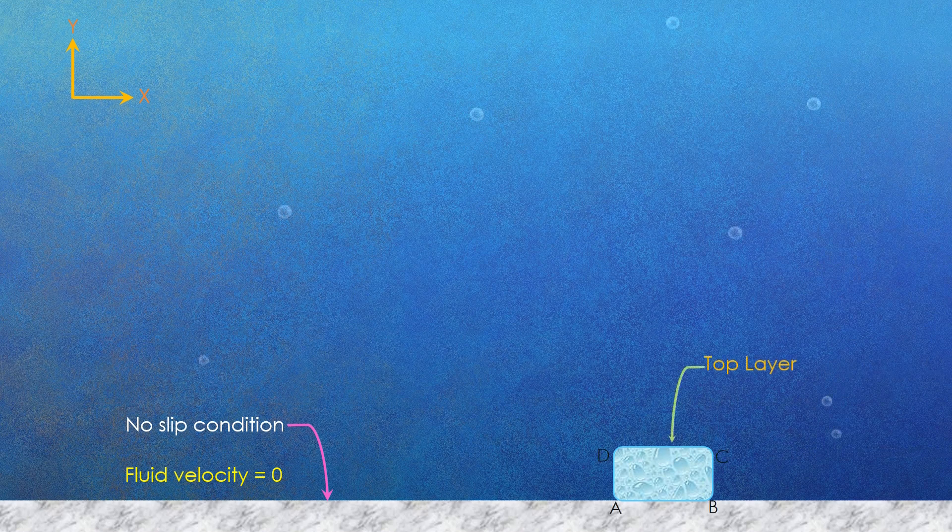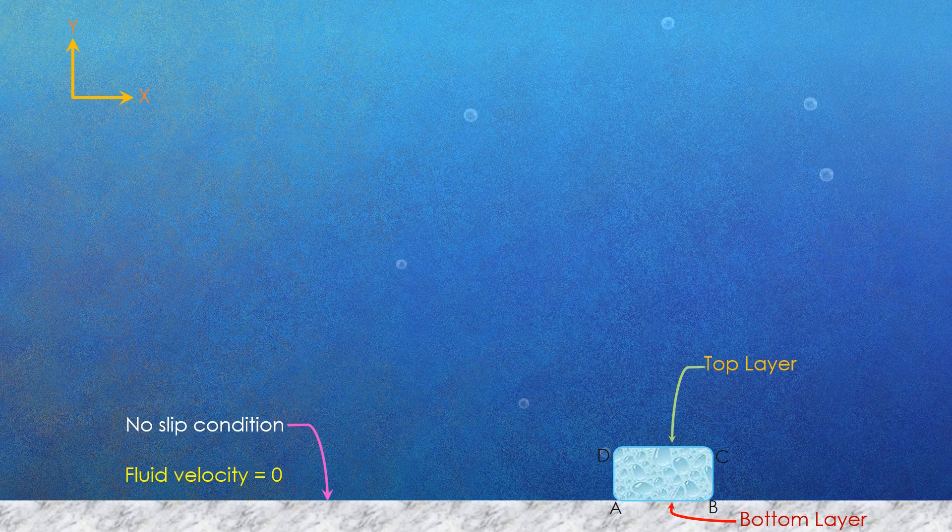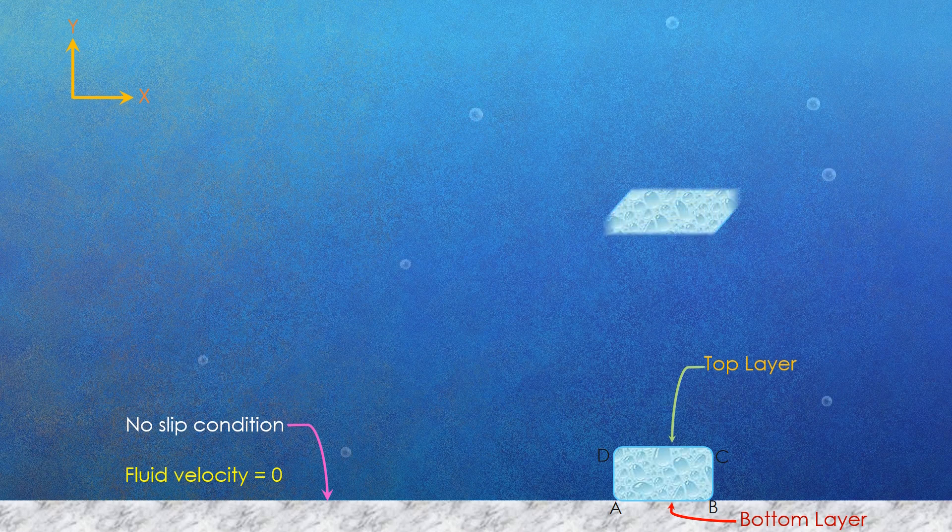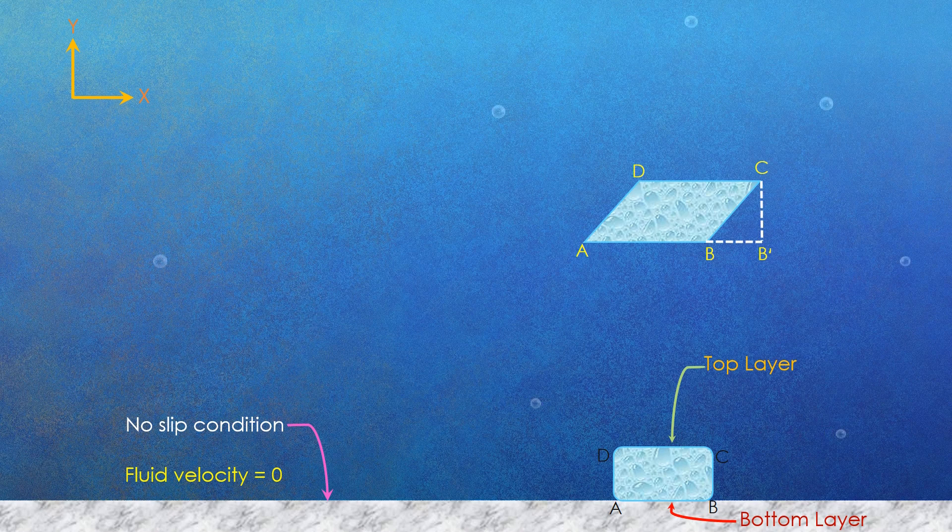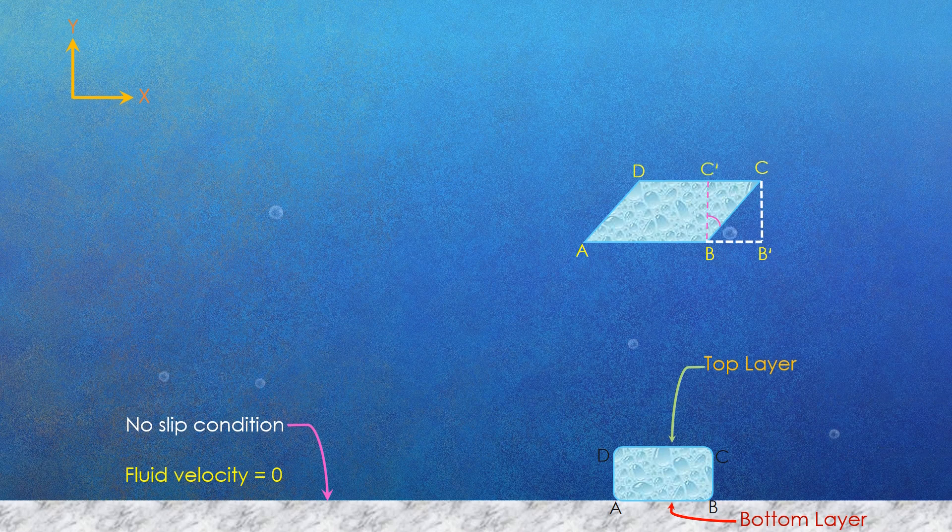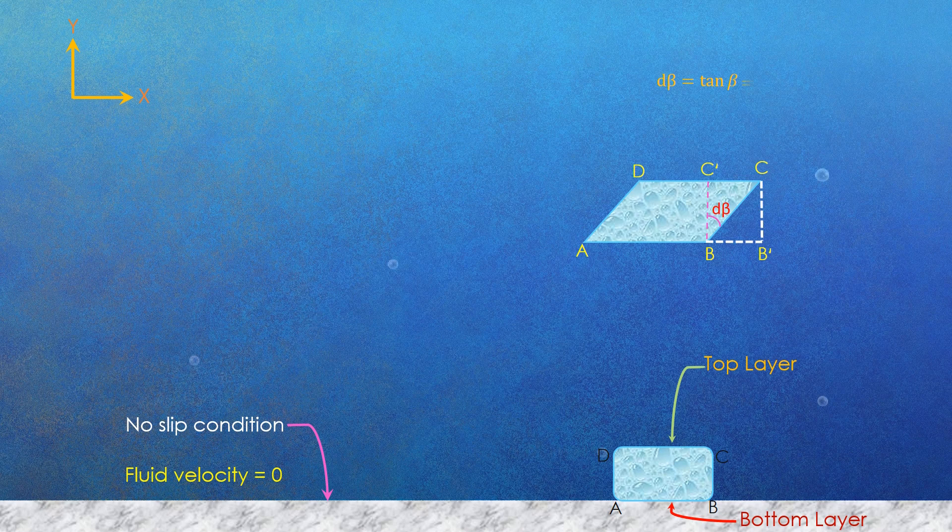Let's take a fluid element close to the plate. Here AB shows the bottom layer of the fluid element which assumes the velocity of the plate, that is zero because of no-slip condition, and CD as the top layer which is at some velocity greater than zero. Since the upper layer of the fluid element moves faster than the lower layer, in a differential time interval dt, the fluid element will deform by differential angle d beta, which can be written as d beta equal to tan beta equal to CC dash by BC dash.